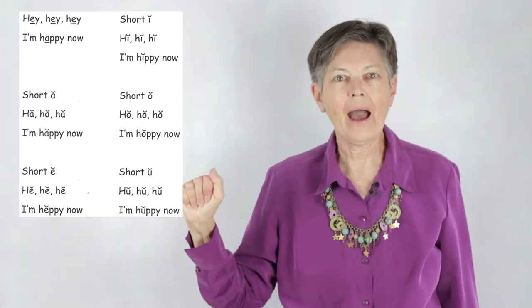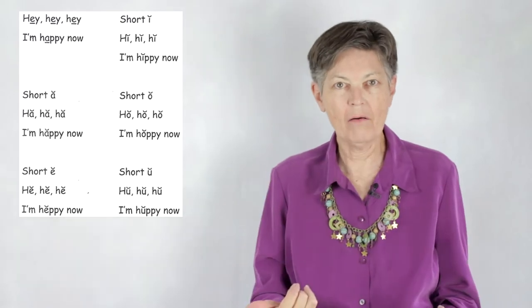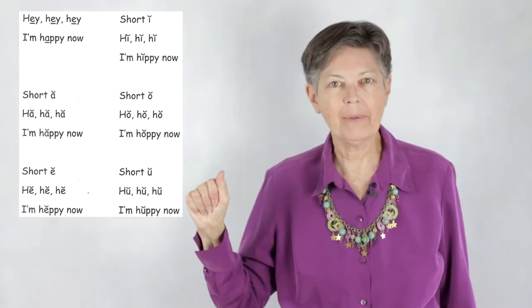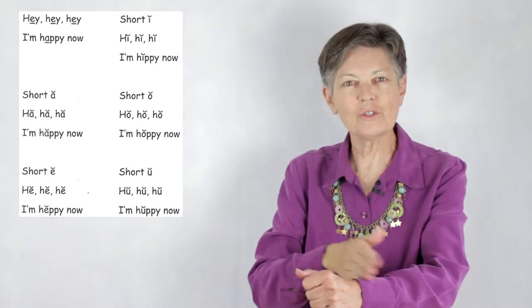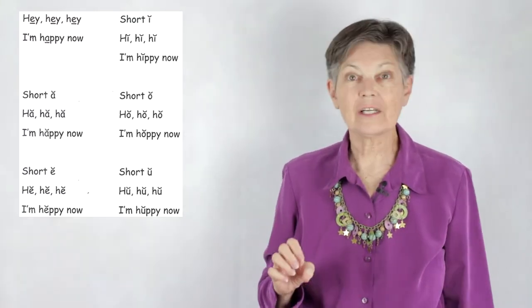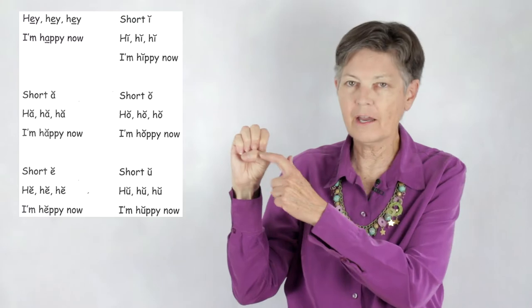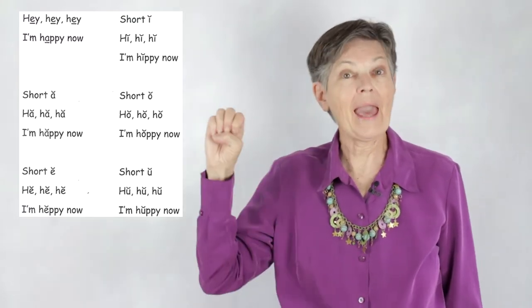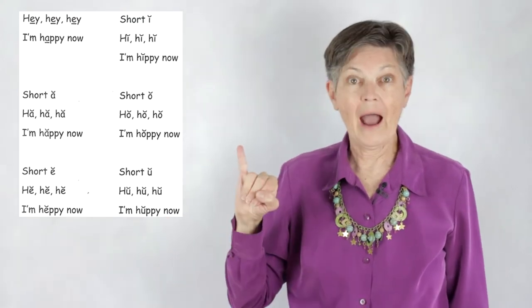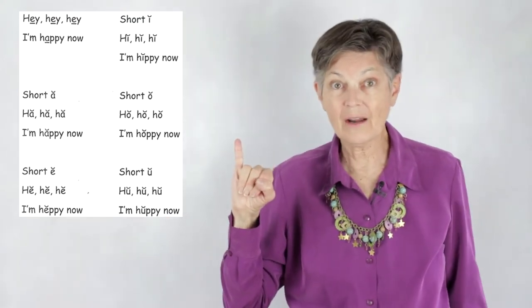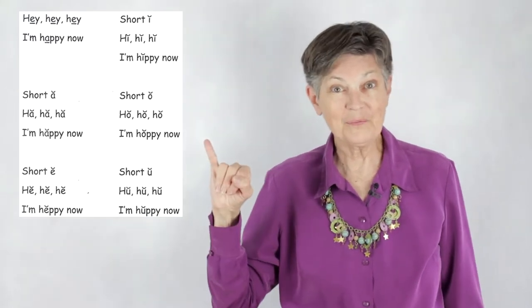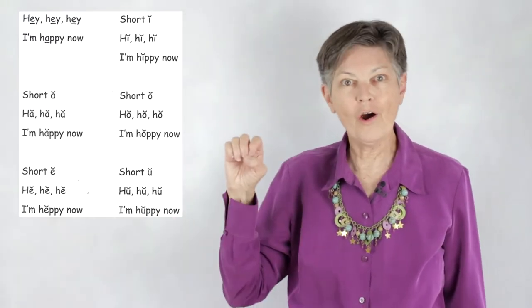Ha ha ha I'm happy, the music shows me how. And then he's going to say short E - so this is the letter E - so it'll go Ha ha ha I'm happy. And then we go short I, and how does short I sound? It goes Hit hit hit I'm hippie.